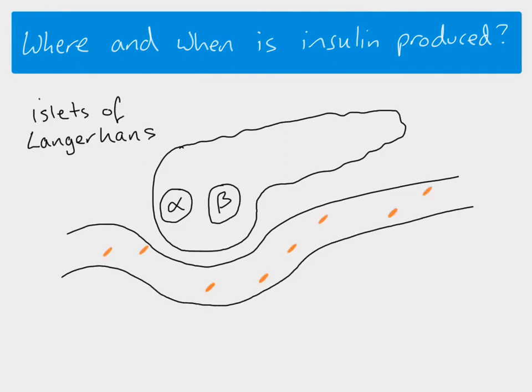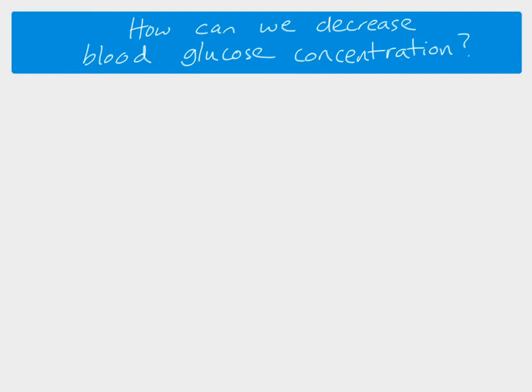The alpha and beta cells act as receptors, detecting the blood glucose concentration. When blood glucose concentration increases, both cell types detect this. The beta cells respond by producing insulin, which is released into the blood. At the same time, the alpha cells detect the increase and stop the production of the hormone glucagon.